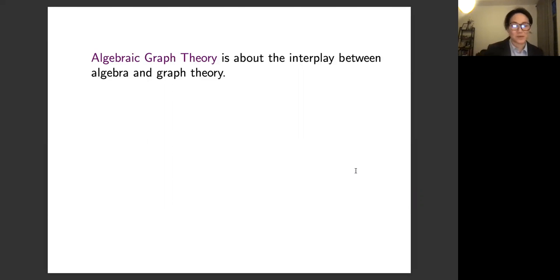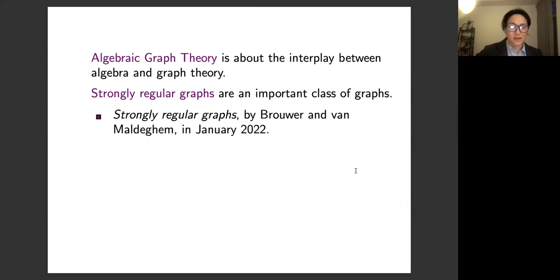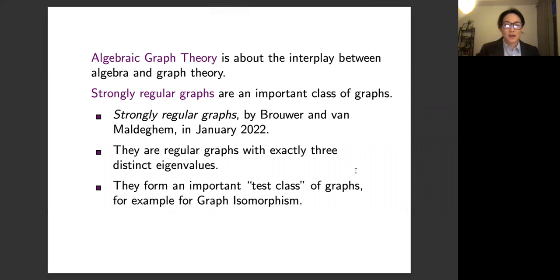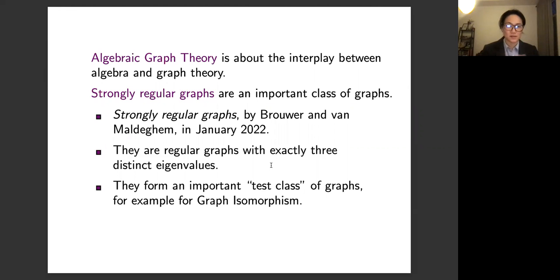Algebraic graph theory is about the interplay between algebra and graph theory — specifically, I will only do linear algebra. Strongly regular graphs, which were in the title, are an important class of graphs; in fact, they now have their own book by Brouwer and Van Maldeghem from January 2022. Algebraically, you take the adjacency matrix of a graph — ones where vertices are adjacent — and compute its eigenvalues. Strongly regular graphs are precisely those that are regular and have exactly three distinct eigenvalues. In that sense, they're the first non-trivial class where the algebraic information is still uncomplicated.